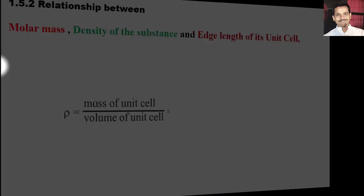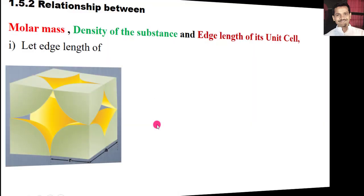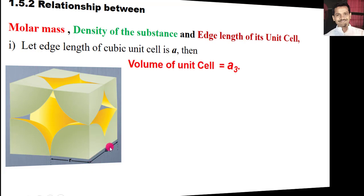We call the edge length 'a'. To find the relationship, we need to find the mass of the unit cell and then the volume of the unit cell. Let us first find the volume of the unit cell. This is the edge of the unit cell and it is 'a'. The volume of the unit cell is equal to a × a × a. Since all edges are the same length because this is a cube, the volume of the unit cell is a³.